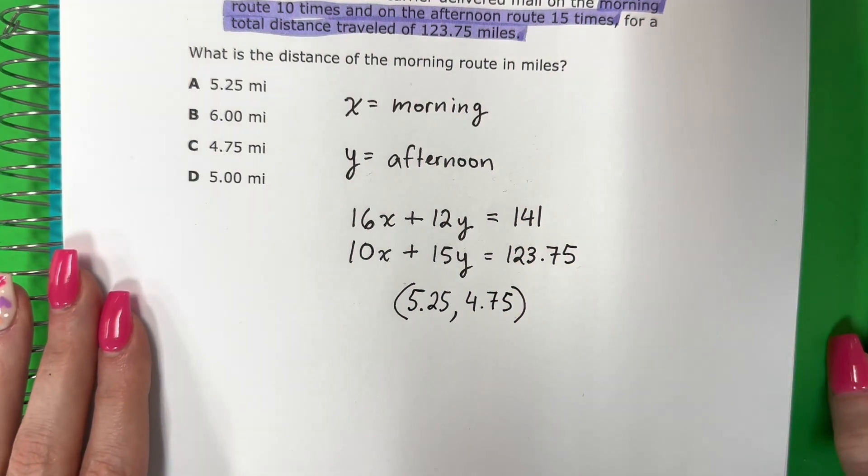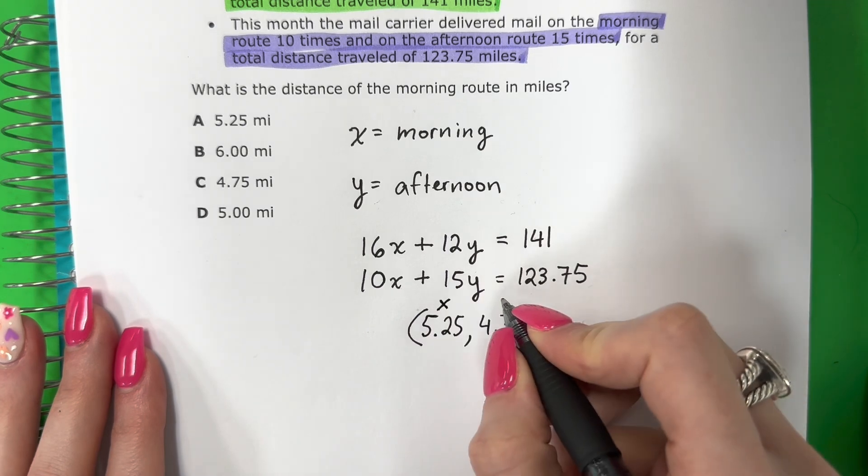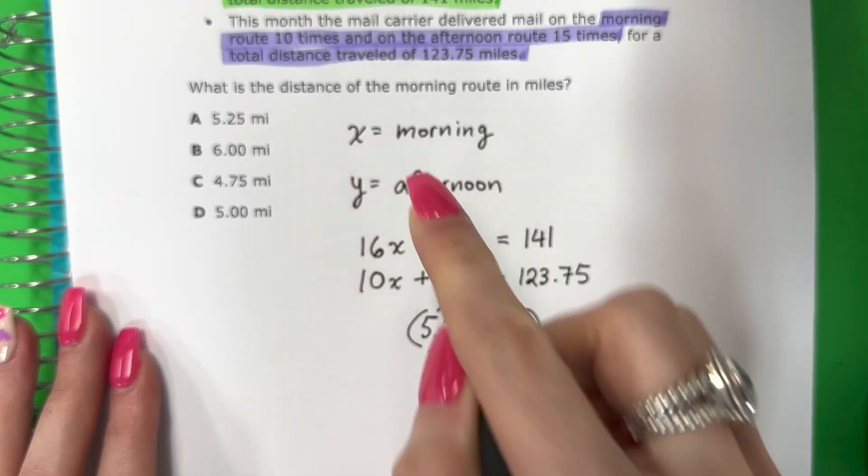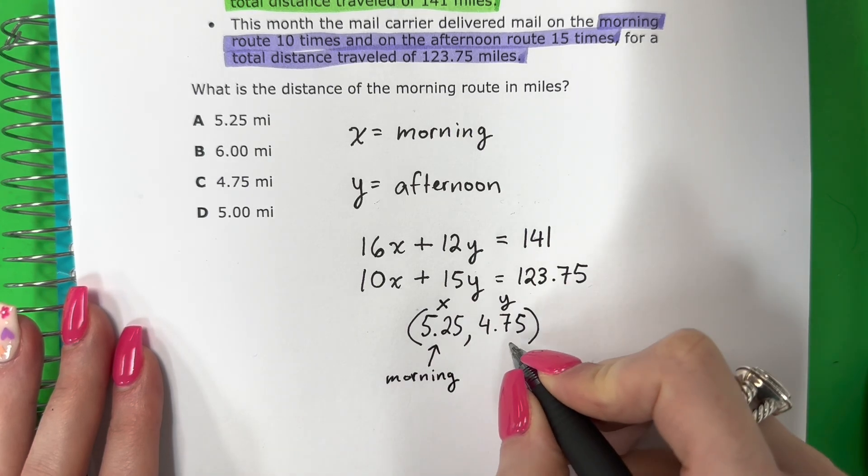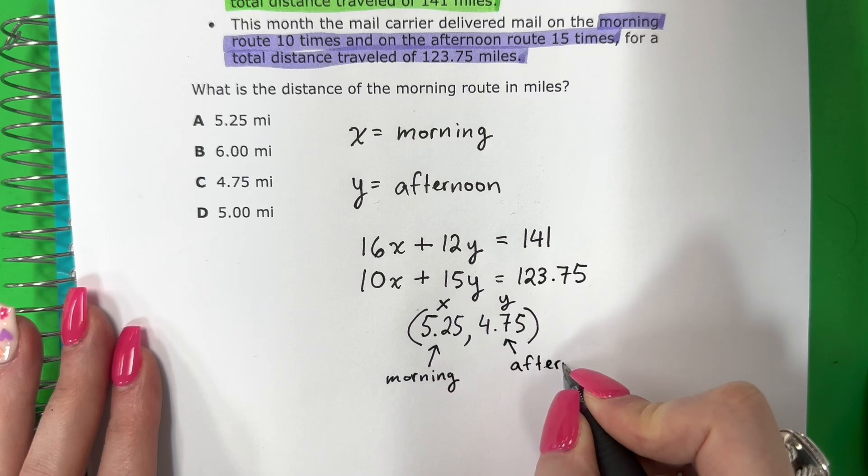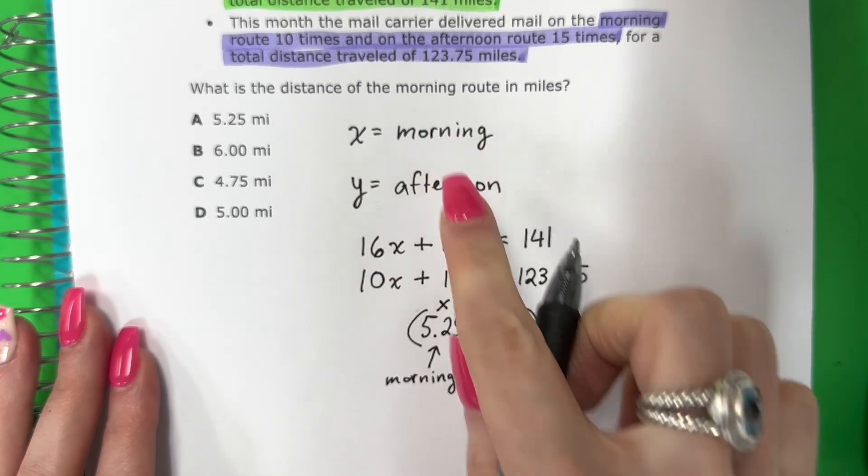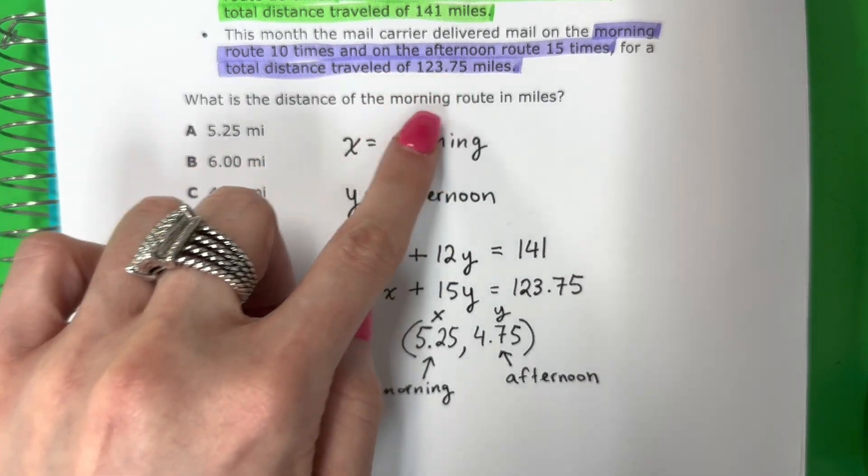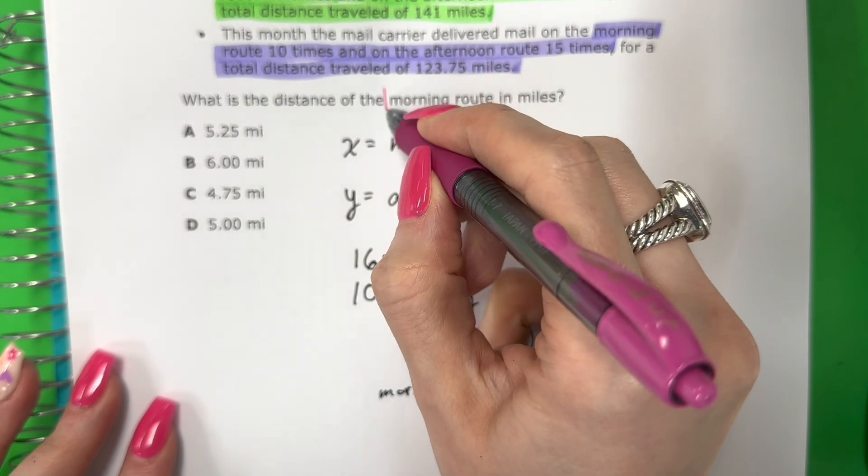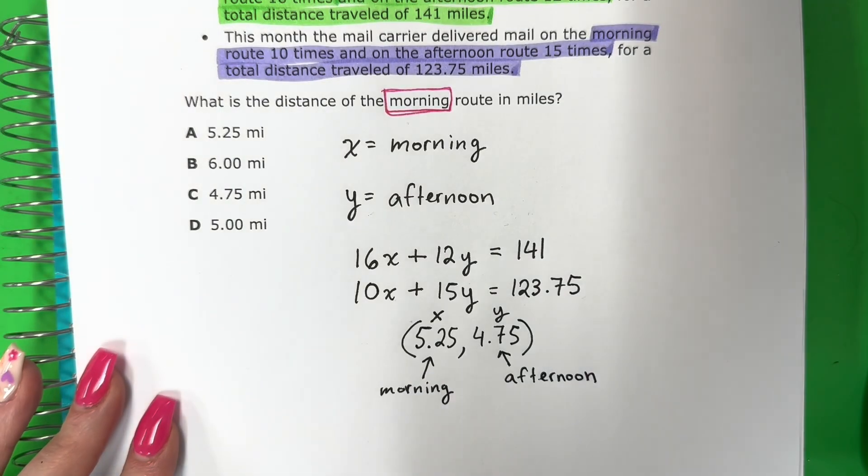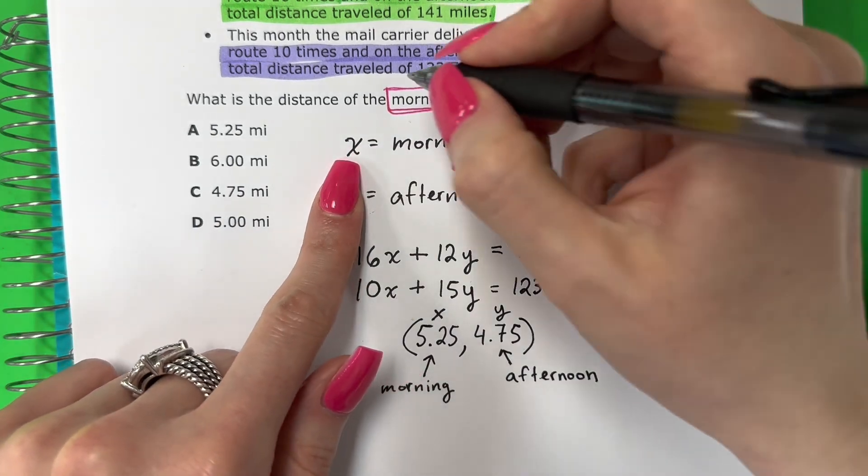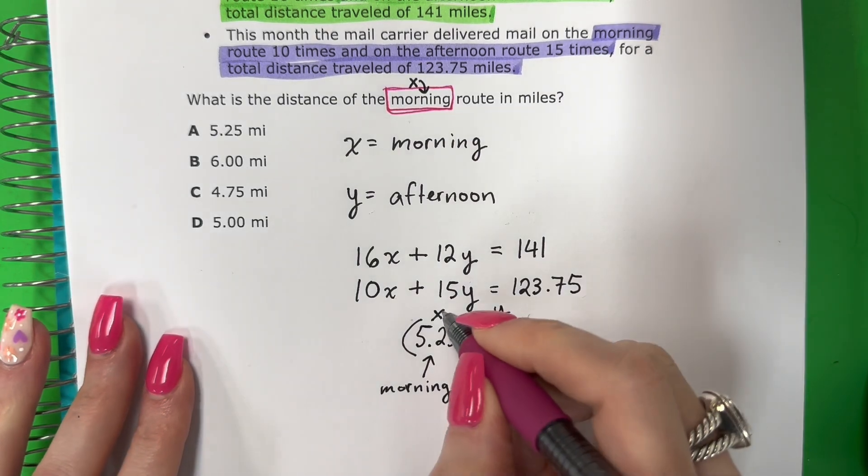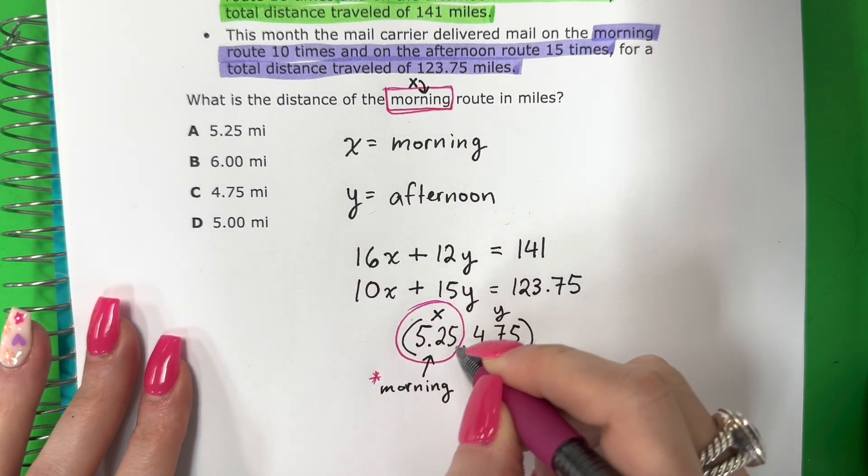This is the distance. Es la distancia. So this is X, Y. The first number is X. El primer número es X. The second number is Y. El segundo número es Y. X is morning, mañana. Y is afternoon, la tarde. Remember, X is morning, X is mañana. Y is afternoon, la tarde. So let's read the question. Vamos a leer la pregunta. What is the distance of the morning route? Okay, so I want morning. Quiero solo mañana. Only the morning, solo la mañana. What letter is morning? ¿Cuál letra es mañana? Morning is X. I want X. Solo quiero X. Which one is X? ¿Cuál número es X? This one right over here. This is the number that I want. Este es el número que quiero. 5.25.